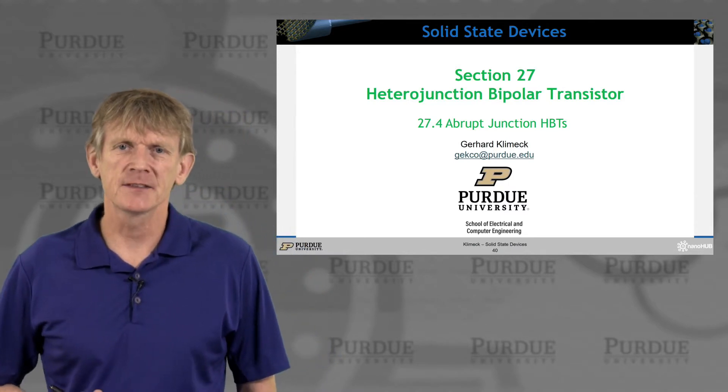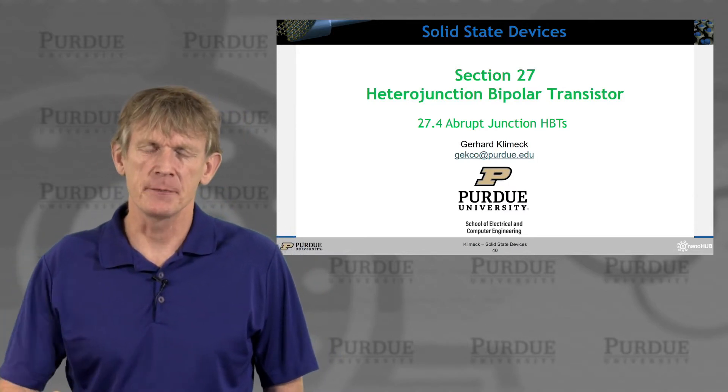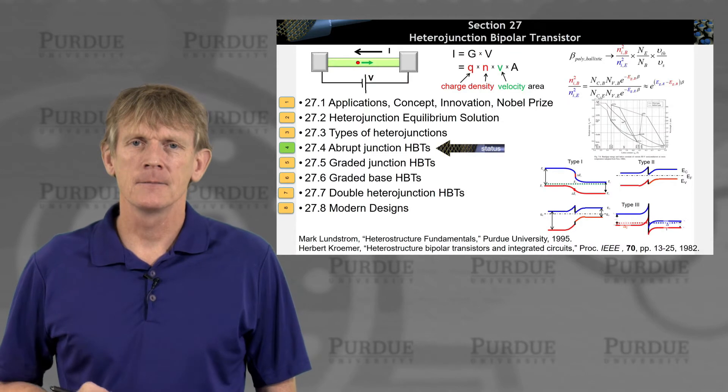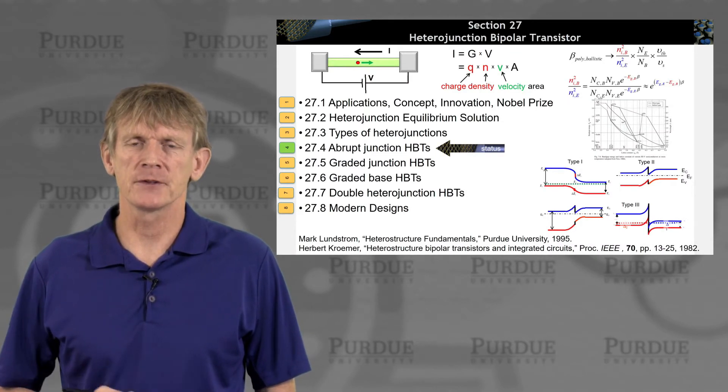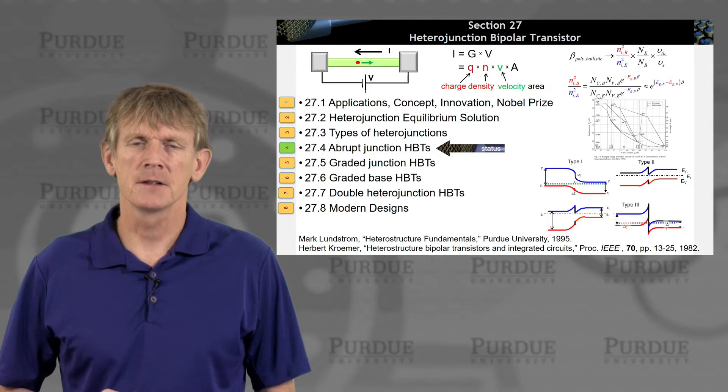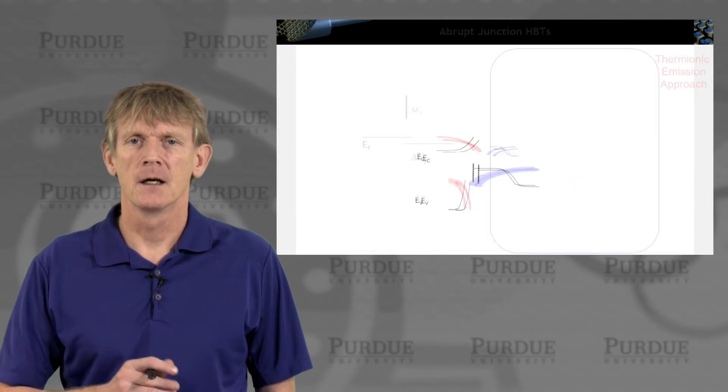Let's talk about an abrupt junction HBT. This is in the context of having different heterojunctions available, different material choices, and let's see what we can do with that.